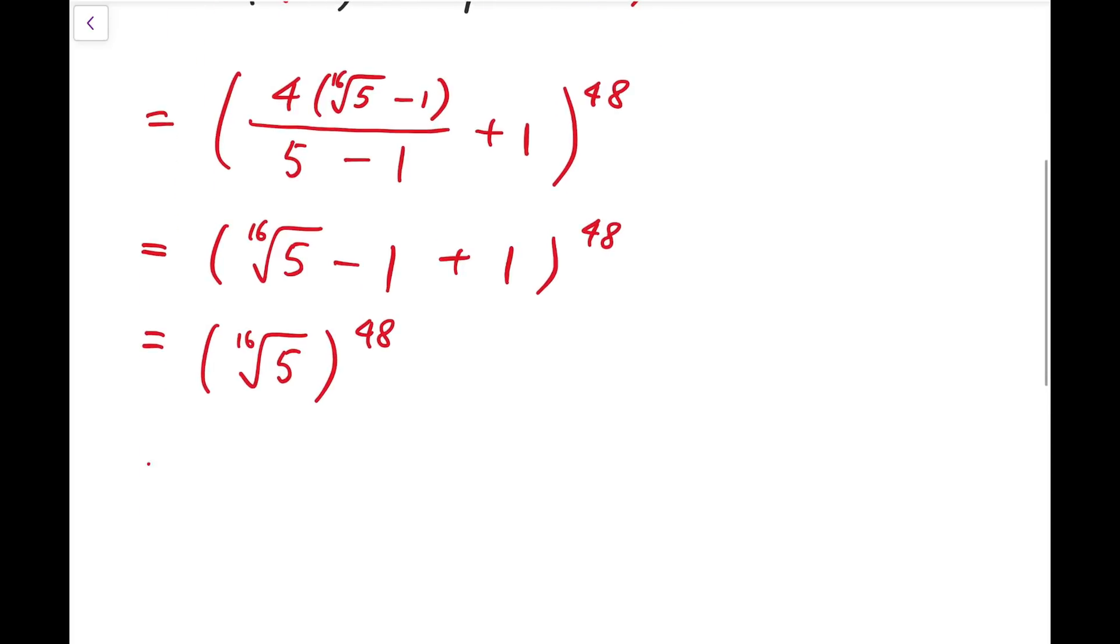Now, that means I'm having 5 to the power 1 over 16 originally, and then when I bring it to the power 48, I'm multiplying the index by 48. So that means it's 5 to the power 3, and so the answer, our final answer, is actually 125.